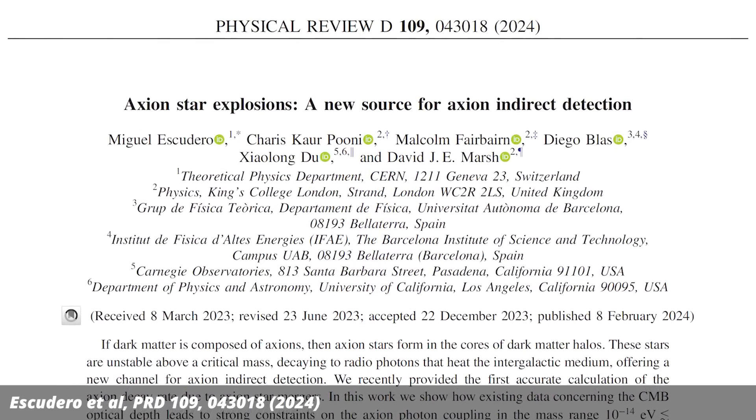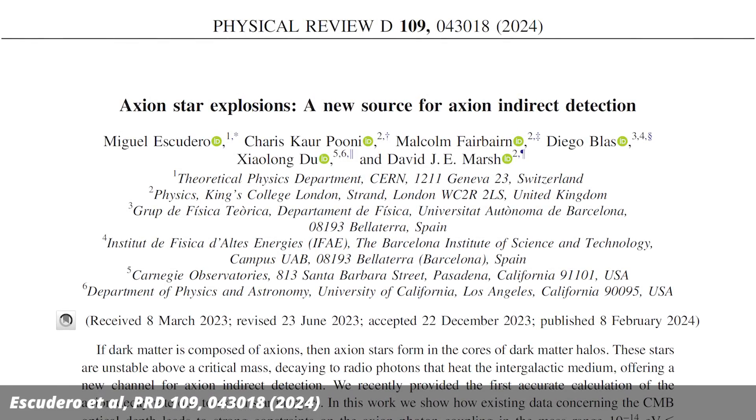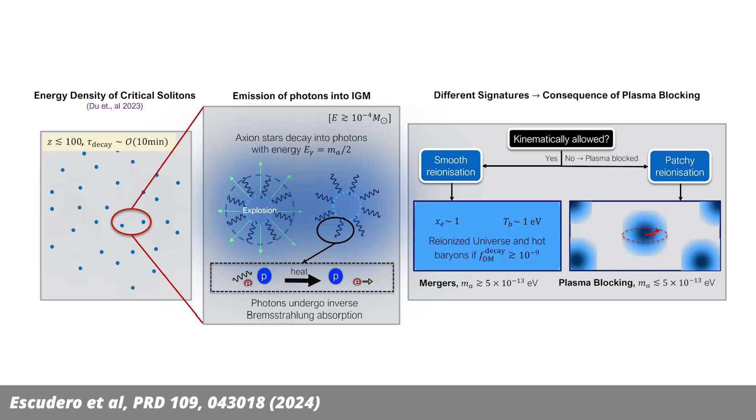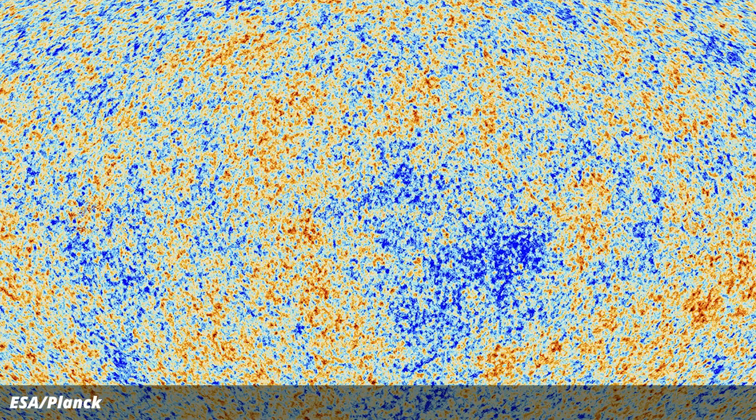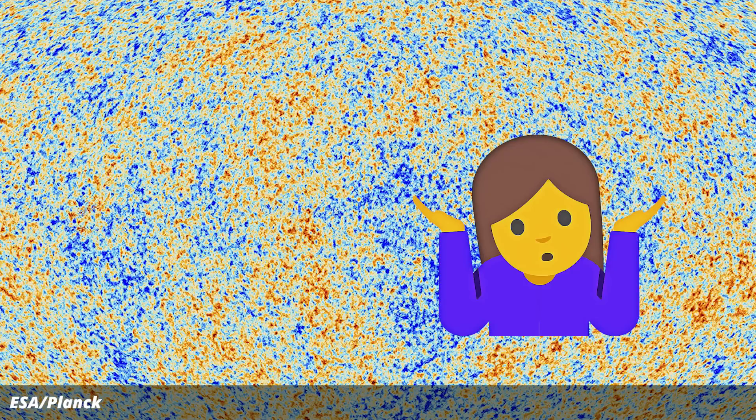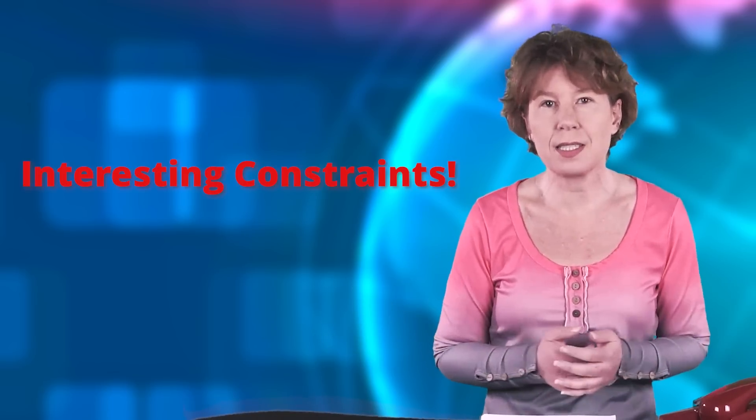They asked if those axion stars were produced in the early universe and they exploded, what did this have done to the gas? Because that could still be observable today. They looked at CMB data and didn't find any evidence of axion star explosions. As it's a common habit among physicists, this isn't called a negative result, but an interesting constraint.